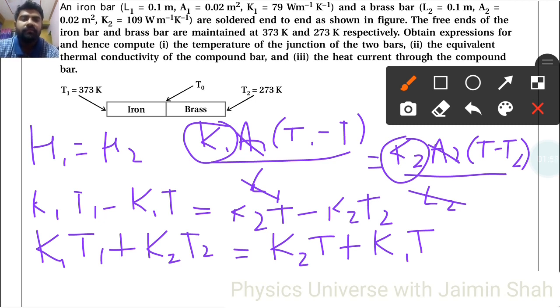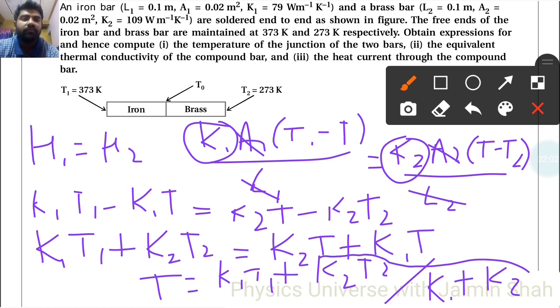So now if I want to find T, then T subject and T common, so we will get T is equal to K1 T1 plus K2 T2 upon K1 plus K2. This is our formula now. K1 we have is 79, T1 we have is 373, K2 we have is 109, and T2 we have is 273.